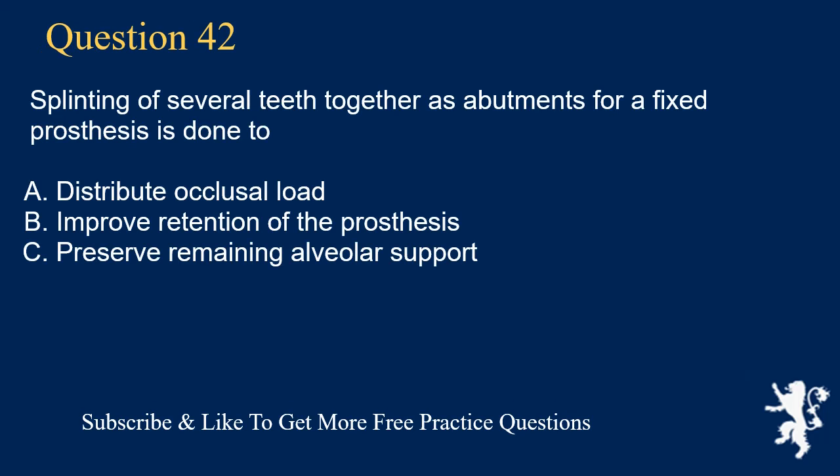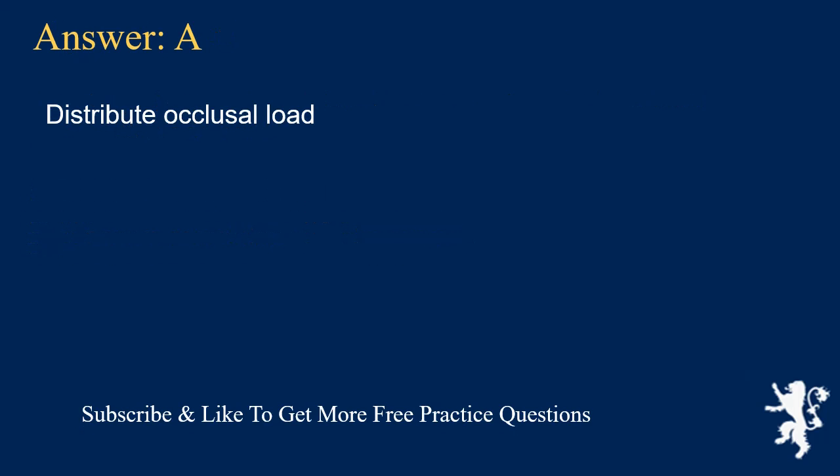Question 42. Splinting of several teeth together as abutments for a fixed prosthesis is done to: A. Distribute occlusal load, B. Improve retention of the prosthesis, C. Preserve remaining alveolar support. Answer: A. Distribute occlusal load.